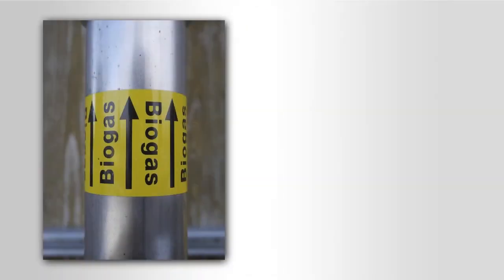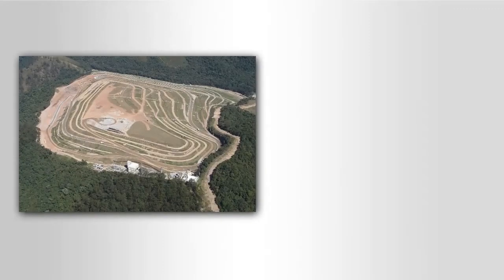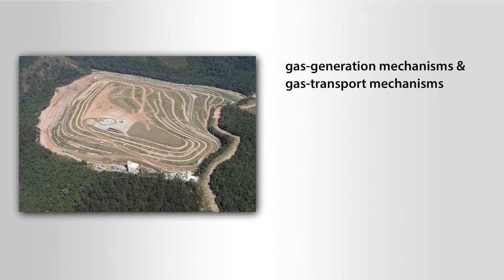The total LFG production rate increases as more waste is added to the landfill. Reported LFG production rates vary from 0.0007 to 0.080 cubic meters of LFG per kilogram of waste burial per year. LFG emissions are governed by gas generation mechanisms and gas transport mechanisms. The following content describes these mechanisms and the major factors influencing LFG generation and transport.